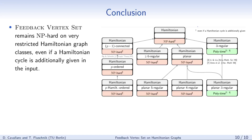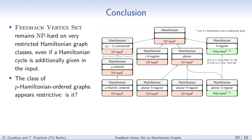To conclude, as the overview of results indicates, feedback vertex set remains NP-hard on very restricted Hamiltonian graph classes, for instance on planar 4-regular Hamiltonian graphs or on p-Hamiltonian-ordered graphs, even if a Hamiltonian cycle is additionally given. We wonder which classic and natural problems become tractable on Hamiltonian graphs, or when a Hamiltonian cycle is additionally given. We studied p-Hamiltonian-ordered graphs, which appear restrictive, but feedback vertex set remains NP-hard on this class. In a similar study for the 3-coloring problem, the computational complexity of 3-coloring on p-Hamiltonian-ordered graphs remains open. Thank you for your attention.